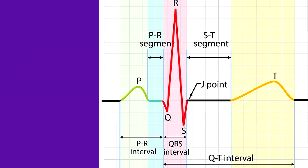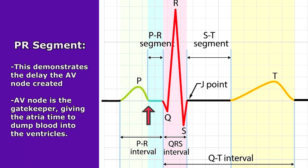Right after the P wave and before the QRS complex we can find the PR segment. The PR segment demonstrates the delay the AV node created. Remember it was the gatekeeper, so it gave the atria time to dump its blood into the ventricles before the ventricles contracted.